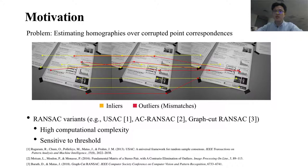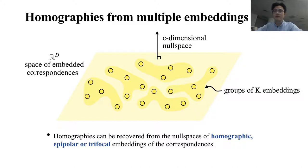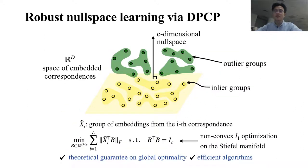In this paper, we make the following contributions. First, we provide a unified approach that recovers homographies from null spaces of homographic, epipolar, or trifocal embeddings. Second, we propose to robustly estimate such null spaces via Dual-Principle Component Pursuit, a non-convex L1 optimization method that has theoretical guarantees and efficient algorithms.